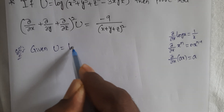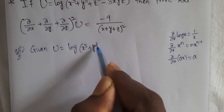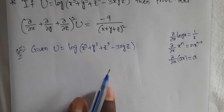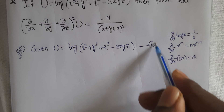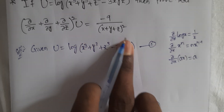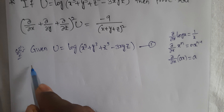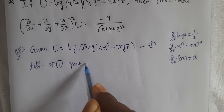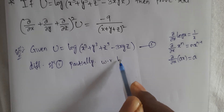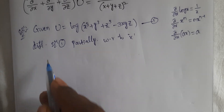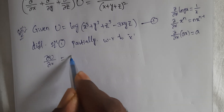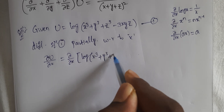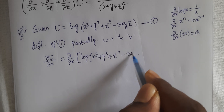So, u = log(x³ + y³ + z³ − 3xyz). This is equation number one. Differentiating equation one partially with respect to x: ∂u/∂x = ∂/∂x of log(x³ + y³ + z³ − 3xyz).